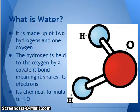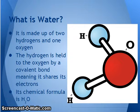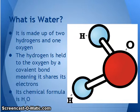You may know water as the clear substance that you drink, but what actually is water? It's made of two hydrogen atoms and one oxygen atom. The hydrogen is held to the oxygen by a covalent bond — we talked about covalent bonds earlier — and the chemical formula for it is H₂O.